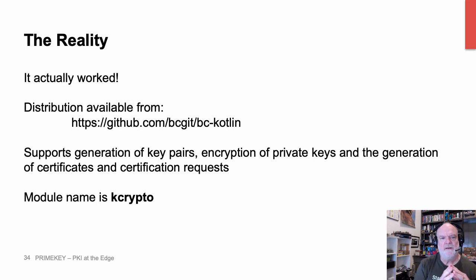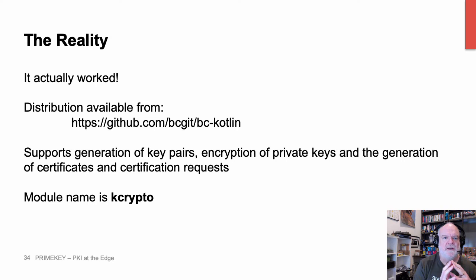The reality was it actually worked, which was the cause of much rejoicing. The distribution is available from our GitHub repository at https://github.com/bcgit/bc-kotlin. The API has been extended to the point where it supports the generation of key pairs, encryption of private keys, and the generation of certificates and certification requests. The module name is actually K-Crypto.